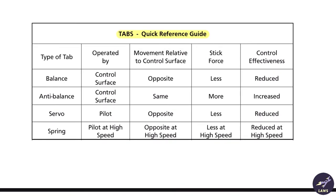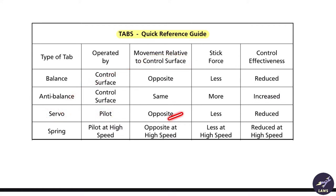Quick reference: the balance tab is operated by the control surface, moves opposite, reduces stick force, and reduces control effectiveness. The anti-balance tab is operated by the control surface, moves in the same direction, increases stick force, and increases control effectiveness. The servo tab is operated by the pilot, moves opposite to the control surface, reduces stick force, and reduces control effectiveness. The spring tab is operated by the pilot at high speed — movement is opposite at high speed, stick force is less at high speed, and control effectiveness is reduced at high speed.